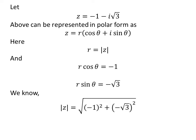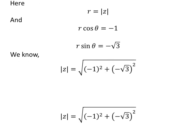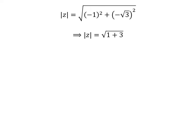As per the definition, modulus of z is equal to the square root of the square of minus 1 plus the square of minus square root of 3. Since the square of minus 1 is 1 and the square of minus square root of 3 is 3, modulus of z is equal to square root of 1 plus 3, which gives modulus of z equal to 2, which is equal to r.